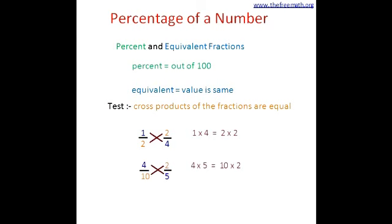Let's take one more example: 4 over 10 and 2 over 5. So 4 times 5 is 20, and 10 times 2 is 20. Since 20 equals 20, that means 4 over 10 and 2 over 5 are equivalent fractions.